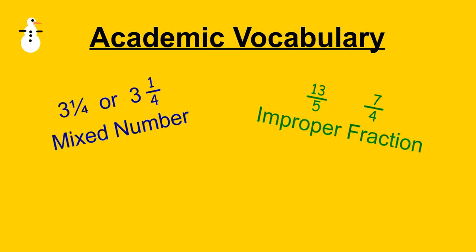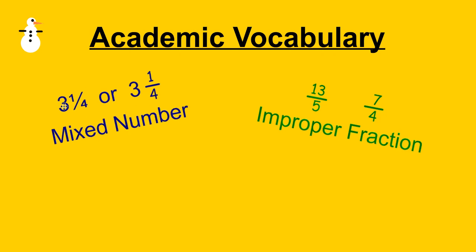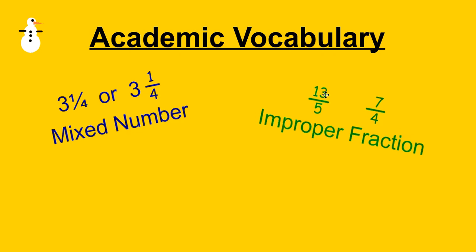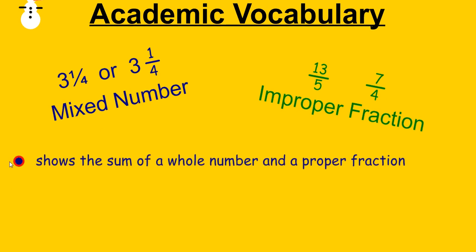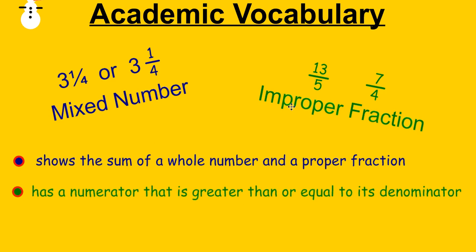First we need to explore some academic vocabulary terms. We have mixed numbers like 3 and 1 fourth, and improper fractions like 13 fifths or 7 fourths. A mixed number shows the sum of a whole number and a proper fraction — so 3 is the whole number and 1 fourth is the proper fraction. For an improper fraction, it has a numerator that is greater than or equal to its denominator. So anytime the top number, the numerator, is larger than or equal to the bottom number, it's an improper fraction.